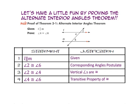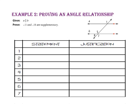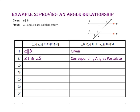By proving that angle 4 is congruent to angle 6, we have proven the Alternate Interior Angles Theorem. In Example 2, we will prove an angle relationship. The given is that line A is parallel to line B, and we are asked to prove that angle 1 and angle 8 are supplementary. Line A is parallel to line B because it is given. Angle 1 and angle 5 are congruent because of the Corresponding Angles Postulate. The measure of angle 1 equals the measure of angle 5 because congruent angles always have equal measures.